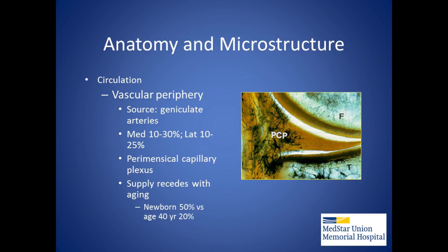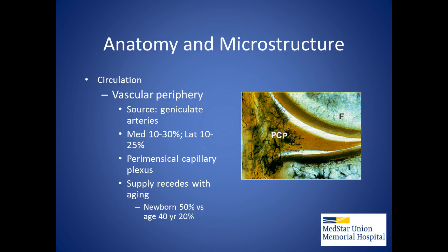The blood supply to the meniscus comes in at the periphery via the perimeniscal capillary plexus. Blood supply to the meniscus recedes with aging. Indications for meniscal repair have traditionally been thought to be best at the periphery of the meniscus, where the blood supply is best.